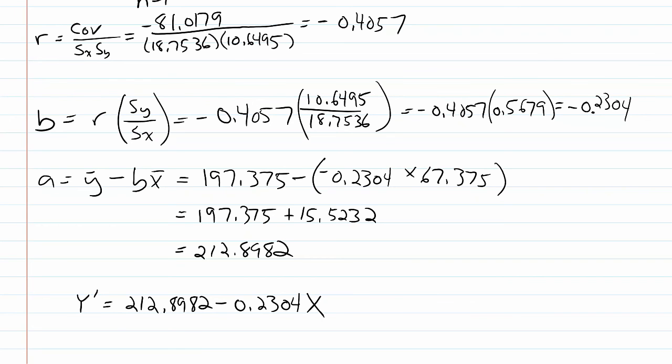So if x was going to be 40, what I get is 212.8982 minus 0.2304 times 40, and that is going to be 203.6822.